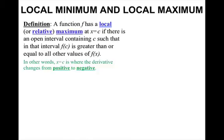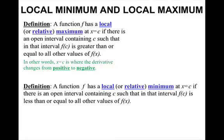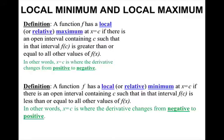In other words, x equals c is where the derivative changes from positive to negative. A function f has a local, or relative, minimum at x equals c if there is an open interval containing c such that in that interval, f of c is less than or equal to all other values of f of x. In other words, x equals c is where the derivative changes from negative to positive.